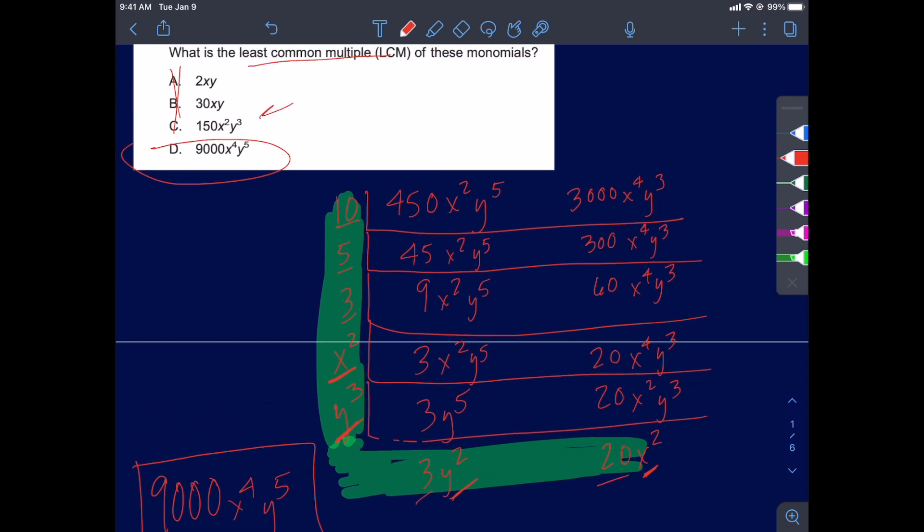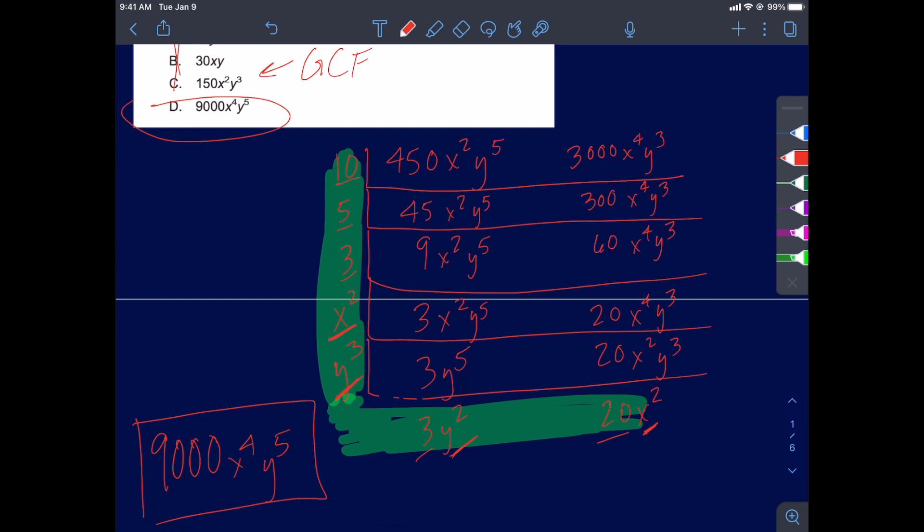Interestingly, they might have been trying to trick us because letter C is the GCF. So if you got those two confused in your head, you might have been tricked into letter C. But if you knew the least common multiple, it should have been obviously a D.